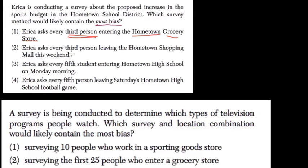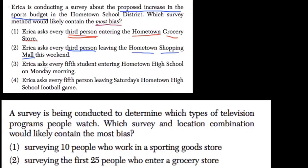The next one: Erica asks every third person — another good random technique — leaving the hometown shopping mall. There is some bias there. Who is shopping at the shopping mall? People with enough money to go shopping. The people that can't afford shopping won't be there, and you'll never know how they feel about it. Especially since this is about a proposed increase in the budget, you'd be asking people who have money to shop about asking for more money in the school district. People who can't afford to go shopping won't be represented.